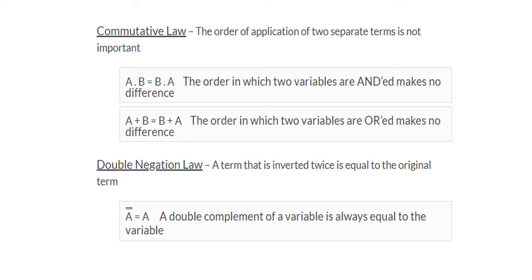Then we have the double negation law, which states that when a term is inverted twice it is equal to the original term. That is, the complement of a-complement equals a itself. For example, if the value of a is 0, then a-complement is 1, and 1's complement is again 0 — you get the variable itself.